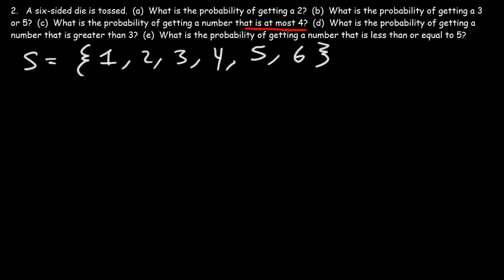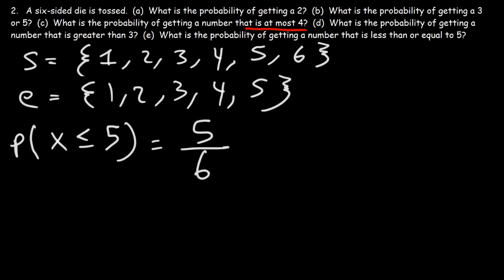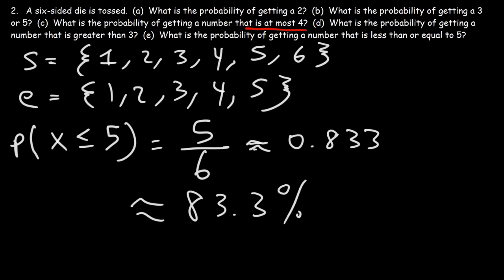For part E: what is the probability of getting a number that is less than or equal to five? Numbers less than or equal to five are everything except six — so five favorable outcomes out of six. Five over six is approximately 0.833 repeating, so there's an 83.3% chance of event E occurring. Now you know how to calculate the probability of an event occurring.